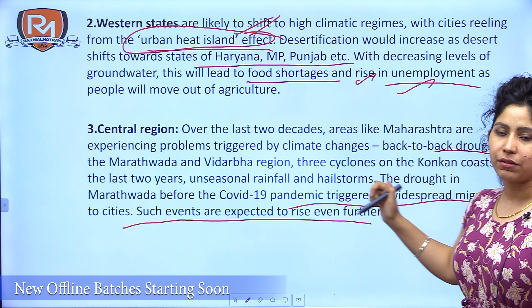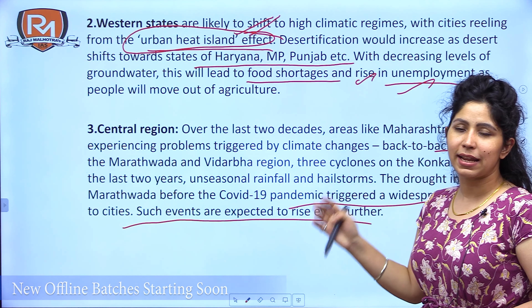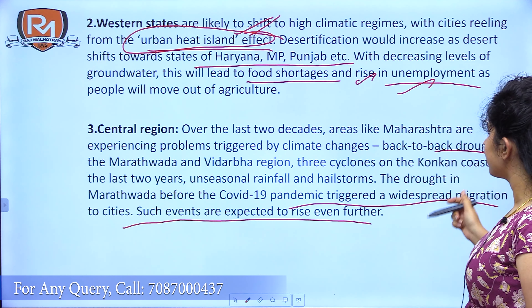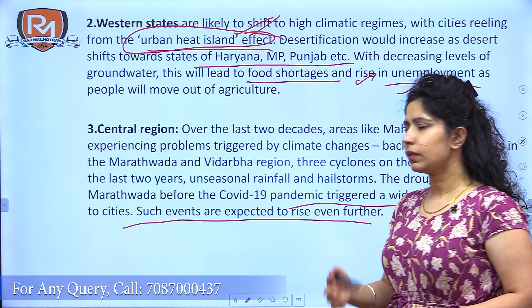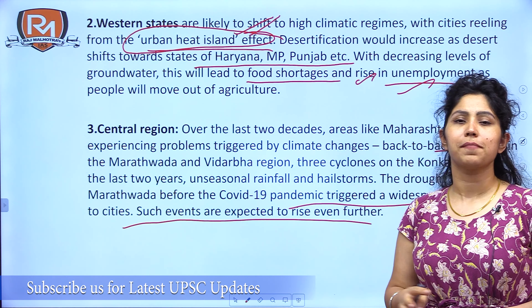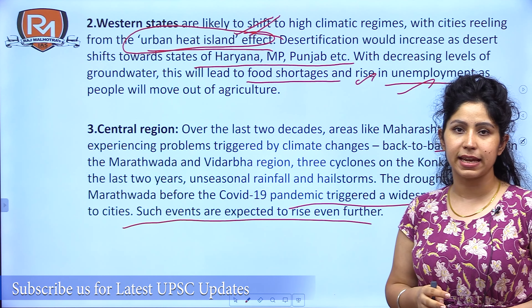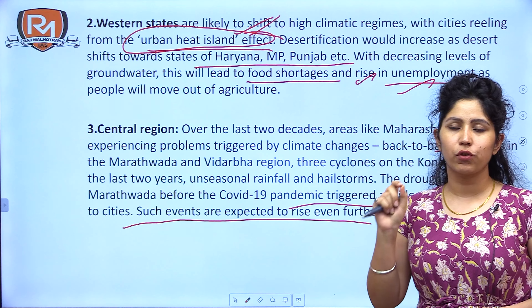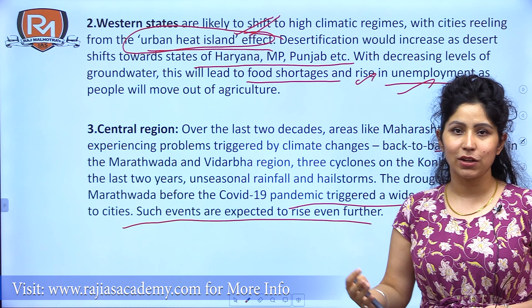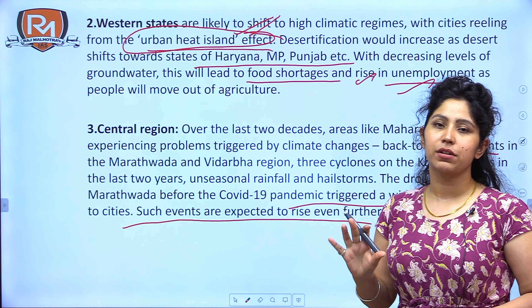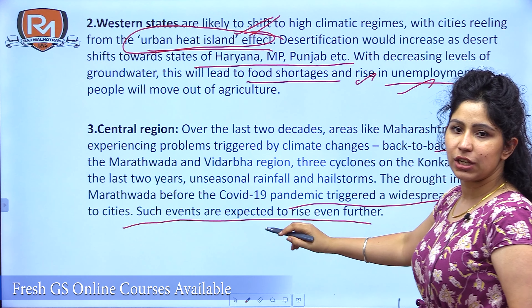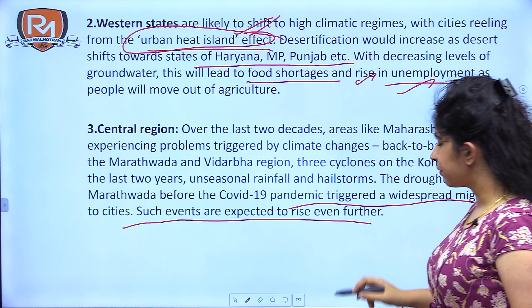The central region, particularly the Marathwada region, has seen a lot of droughts over the last two decades. In recent years, significant migration from these places has taken place. Agriculture, which was the prime economic activity, is no longer viable in many of these areas. These are climate refugees — climate-induced migration — and such events are expected to rise even further.